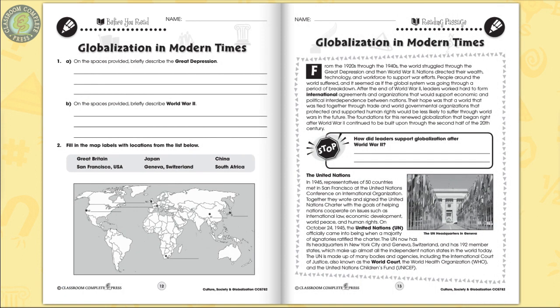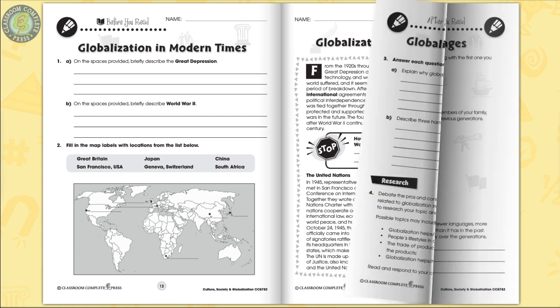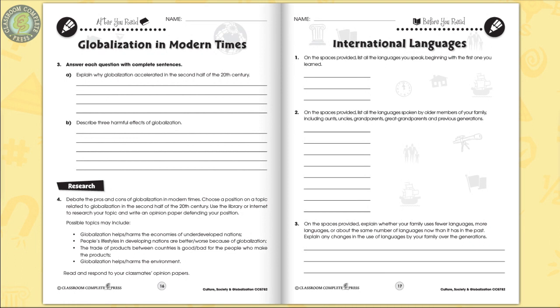Every chapter has a before-you-read section to see what learners already know about the topic, ideal for differentiated learning. Conduct a survey at your school to find out whether mother languages are being passed down to current generations.